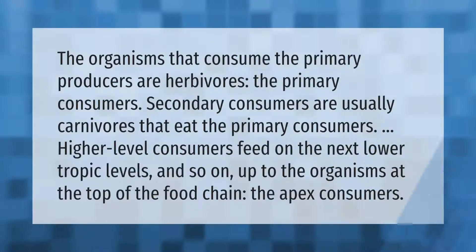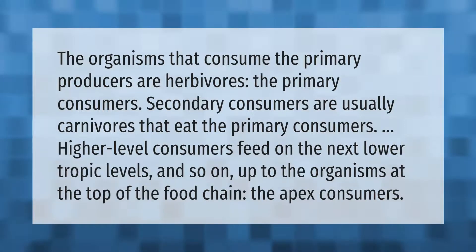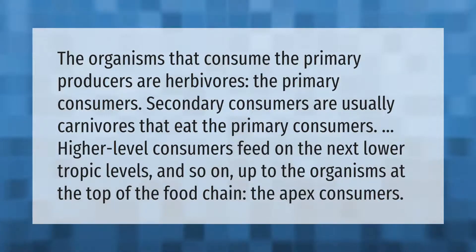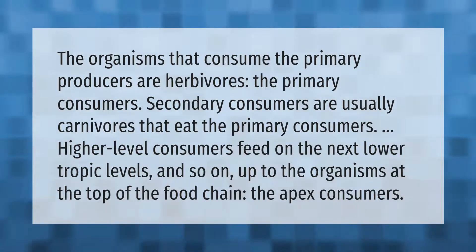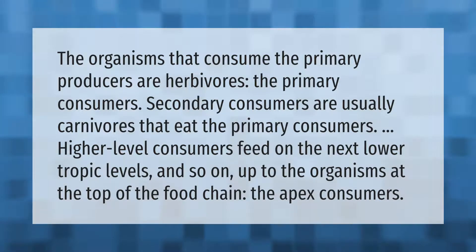The organisms that consume the primary producers are herbivores — the primary consumers. Secondary consumers are usually carnivores that eat the primary consumers. Higher level consumers feed on the next lower trophic levels, and so on up to the organisms at the top of the food chain — the apex consumers.